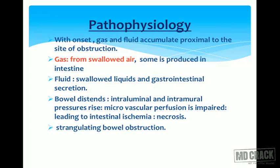In the pathophysiology of obstruction, when obstruction sets in, gas and fluid accumulate proximal to the site of obstruction. Gas is mainly from swallowed air, with some produced in the intestine by bacterial reaction. Fluid comes from swallowed liquids and gastrointestinal secretions. The bowel starts distending, intraluminal and intramural pressure rises, microvascular perfusion is impaired, leading to intestinal ischemia, followed by necrosis and strangulating bowel obstruction.